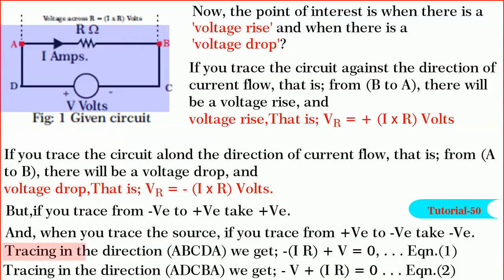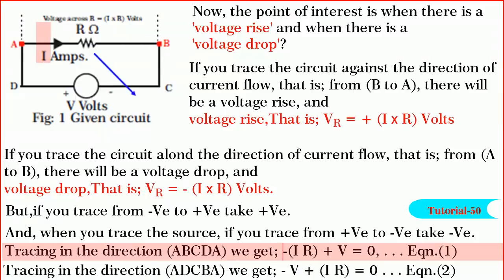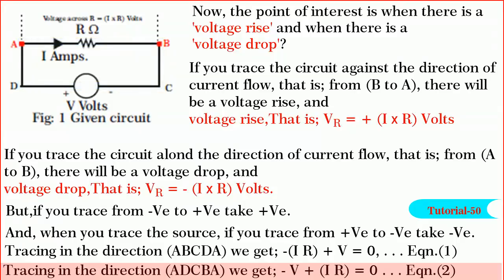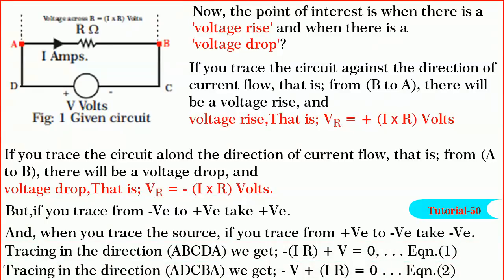Now, if you trace this simple circuit in the clockwise direction, that is from A to B to C to D to A, we get minus I into R plus V is equal to zero. And if you trace the circuit in the anticlockwise direction, that is A, D, C, B, A, we get minus V plus I into R is equal to zero. You see that both equations are the same. Hope the concept of voltage rise and voltage drop is clear to you.